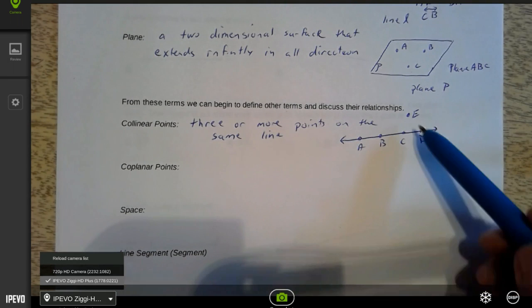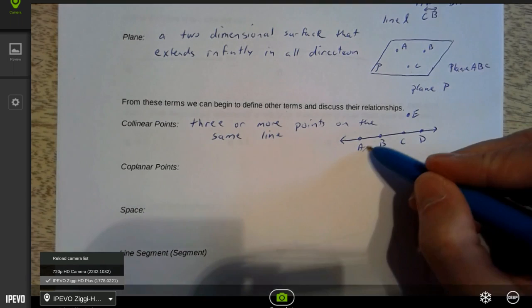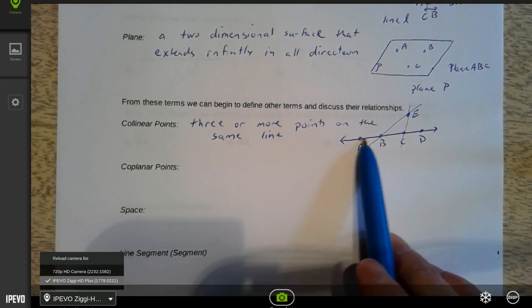Now, E and B would be on the same line because any two points make a line. So I could draw a line through A, B and E, or E and C. So two points make a line, but it takes three or more to be collinear.